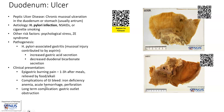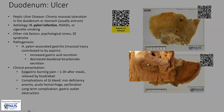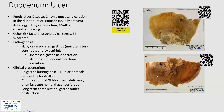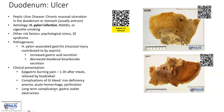However, if the bleeding is due to erosion of a larger vessel — for example here, we can see two vessel cross-sections in the base of this peptic ulcer — this can give rise to potentially massive bleeding, hematemesis and melena, and even exsanguination.